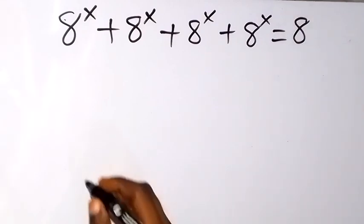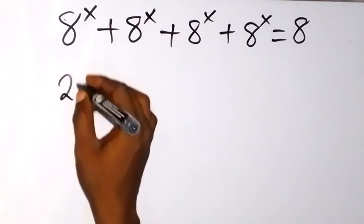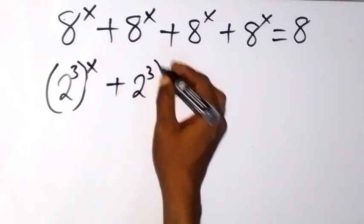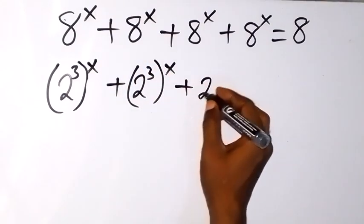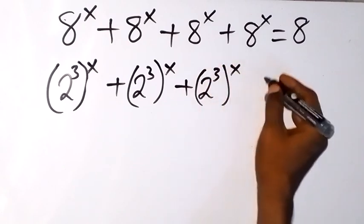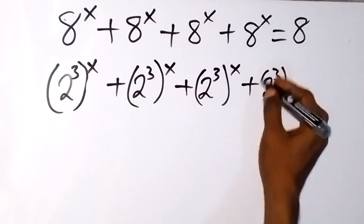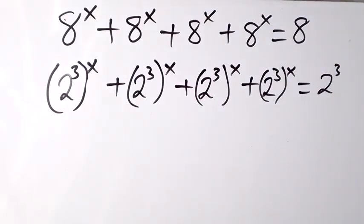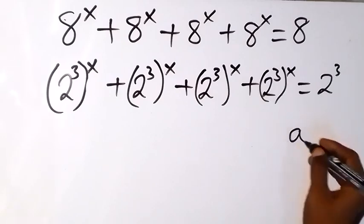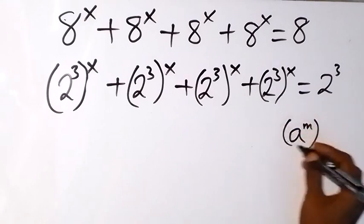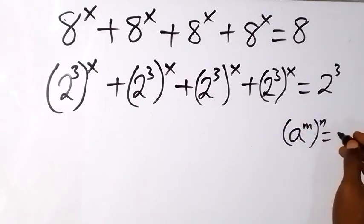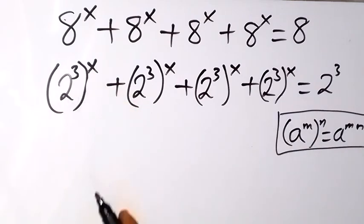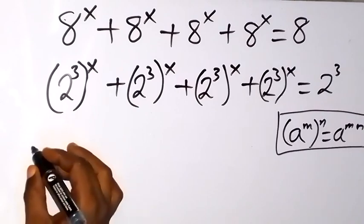Let's solve this. First, 8 can be written as 2 raised to the power 3. So we rewrite each term as 2 raised to the power 3, raised to the power x. We then apply the law of indices: when we have a^n raised to the power n, we multiply the exponents to get a^(n×n). So each term becomes 2 raised to the power 3x.